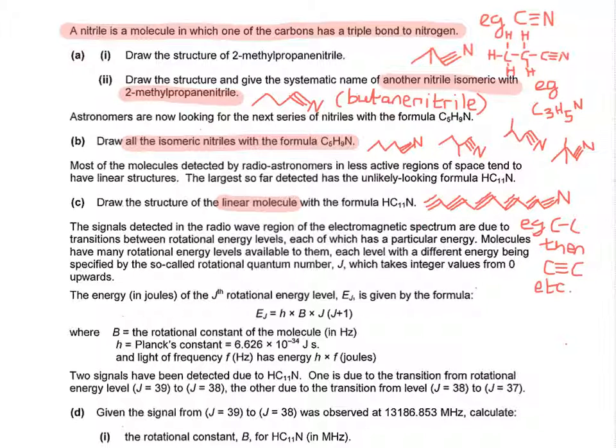So when it starts talking about the signals detected in the radio wave region of the electromagnetic spectrum, it starts to move away from chemistry a little bit and start to get a bit mathematical, maybe a little bit quantum physics when it starts talking about Planck's constants. Don't worry about that. They've got you started on it, they've got you relaxed and doing some fairly straightforward stuff. Now that you're up and running, you can have a think about how you might approach the harder part.